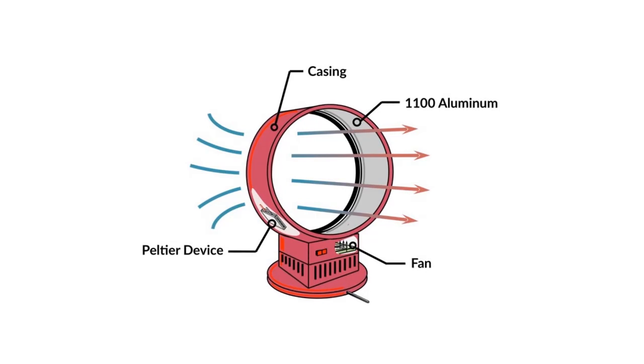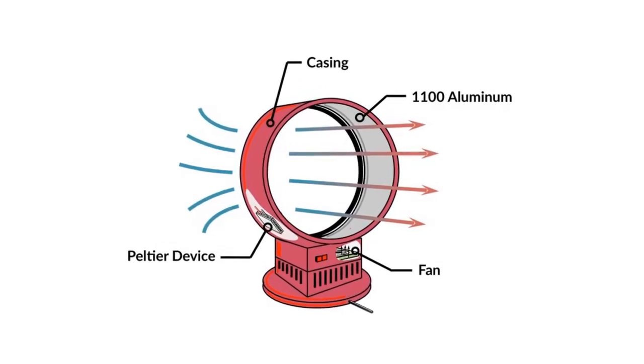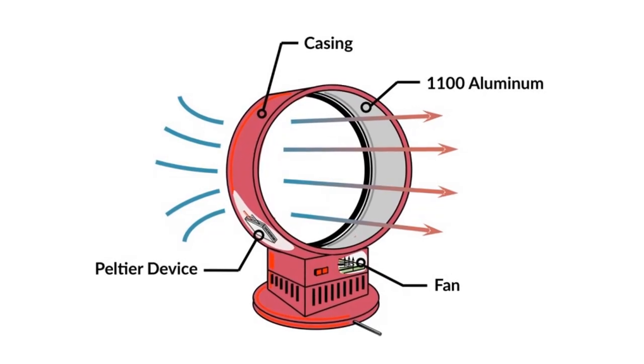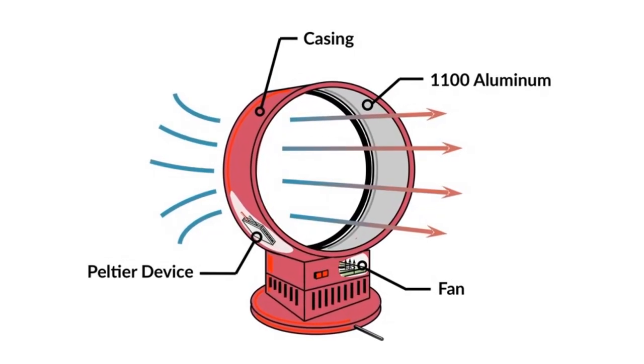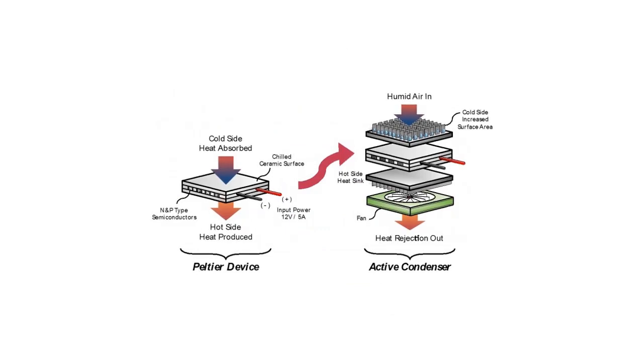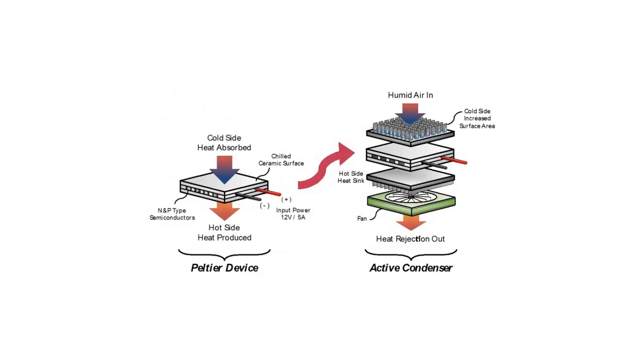Water scarcity is a pressing global issue that demands immediate attention and innovative solutions. In response to this challenge, our design project focused on developing a do-it-yourself (DIY) atmospheric water generator (AWG) prototype to provide an affordable and sustainable source of drinking water.